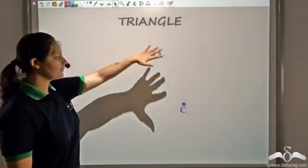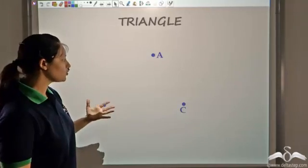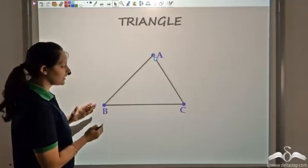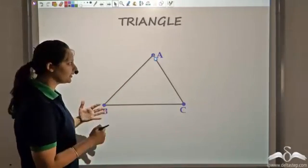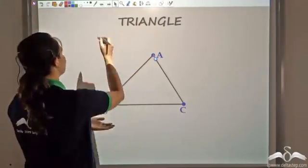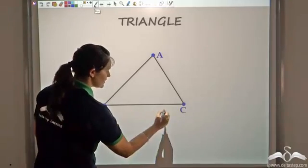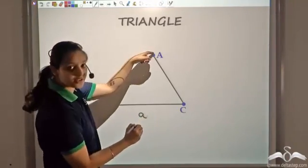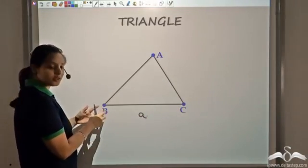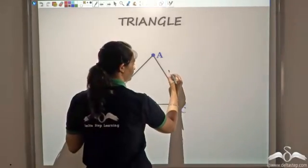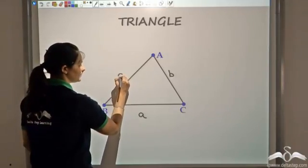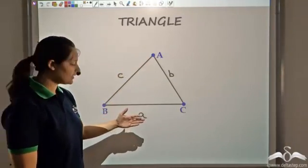So far we have seen that a triangle has three vertices or three points. Joining these three vertices, I get three sides. Now rather than naming these sides AB, AC, BC again and again, for ease we can just name the side opposite to an angle by a small letter. So I call side BC as 'a' because it is opposite to vertex A. Side opposite to capital B would be small 'b', and the side opposite to C would be small 'c'. So I can represent opposite sides by small letters.